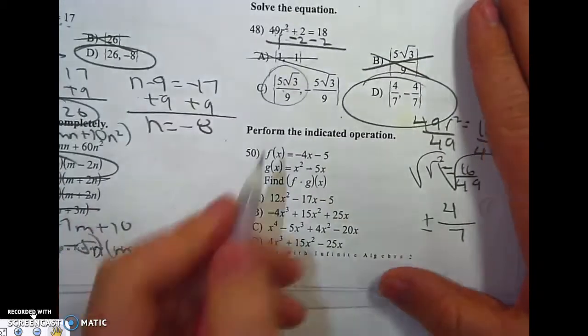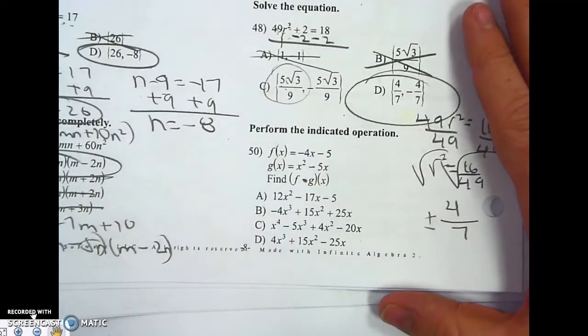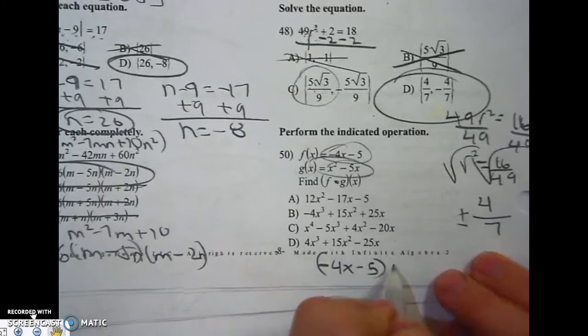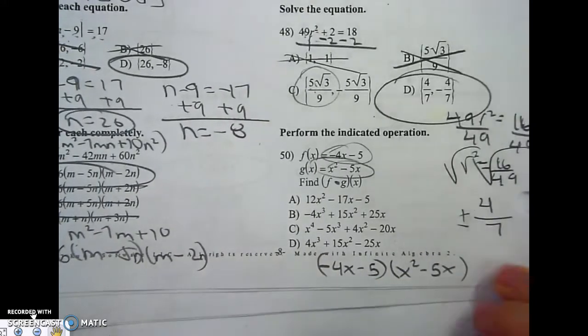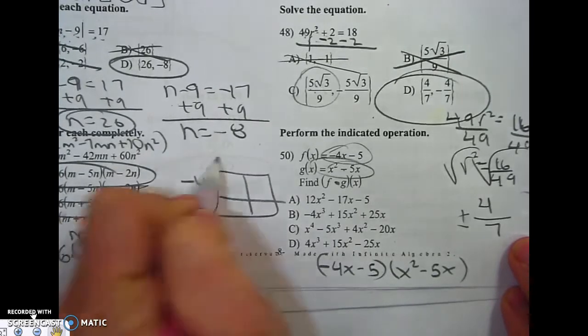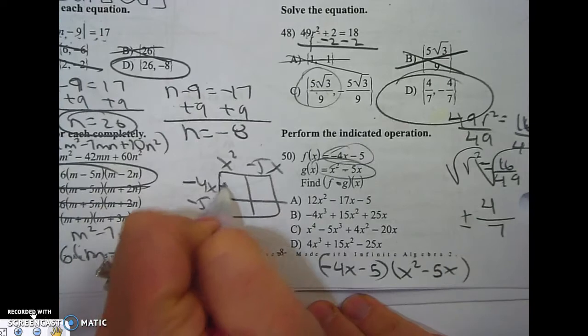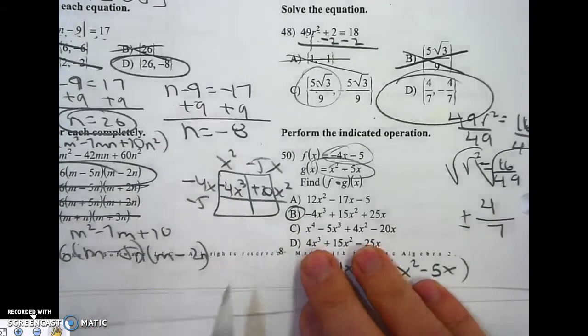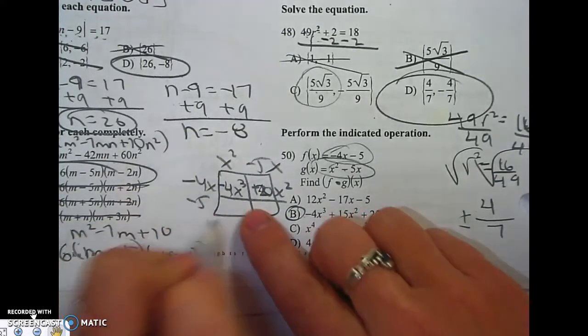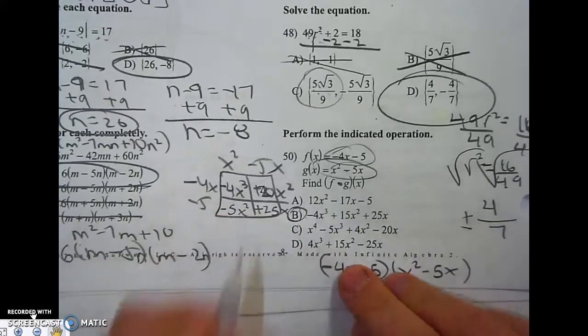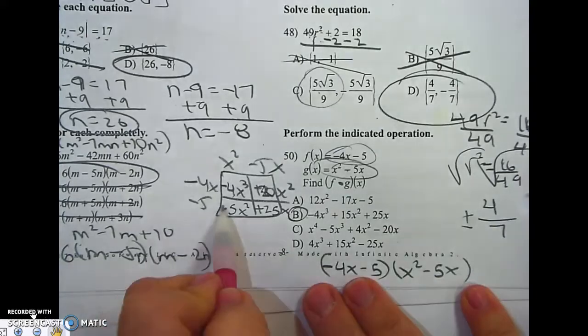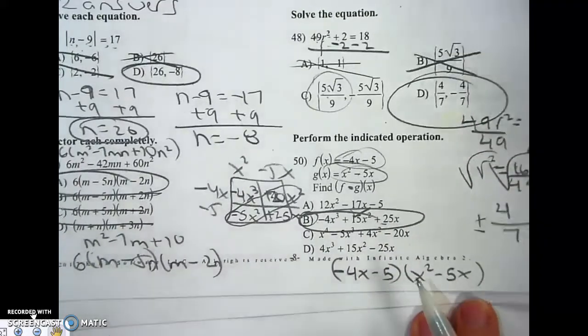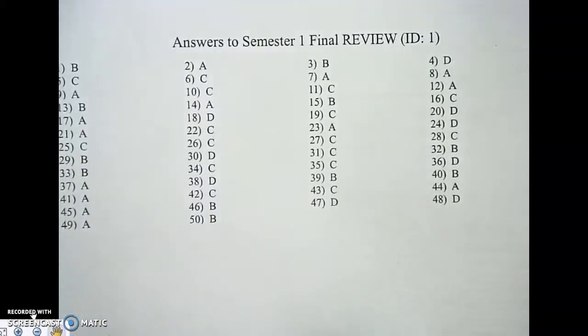Number 50. Perform the indicated operation. This dot means multiply. So I'm just literally going to take F and multiply it by G. Negative 4X minus 5 times X squared minus 5X. I'm going to box it out. Negative 4X cubed plus 20X squared. Now I'm worried you're going to be like, oh, negative 4X cubed. It's B. You want to make sure, though, that all the other answers match up. Or all the other parts of it match up. Otherwise, you might get confused. So 20 minus 5 is 15. And there's the 25X. So the answer is B. And by the way, when you turn the page, there's all the answers. So make sure I'm good to go.